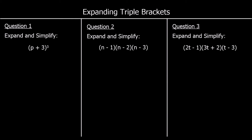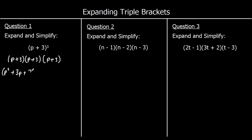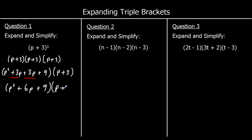And to finish up, three questions — pause the video, give these a go, and press play when you're ready for the answers. Okay, the first one: I've got (p + 3) cubed. So that means we've got (p + 3)(p + 3)(p + 3). We're going to expand and simplify the first two. p times p is p squared. p times 3 is 3p. 3 times p is 3p. And 3 times 3 is 9. We've still got the third bracket on the end. Collecting like terms: 3p and 3p makes 6p. So we've got p squared plus 6p plus 9 times (p + 3).